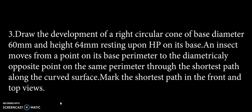Question number three: draw the development of a right circular cone of base diameter 60 mm and height 64 mm resting upon its base. An insect moves from a point on its base perimeter to the diametrically opposite point on the same perimeter through the shortest path along the curved surface. Mark the shortest path in the front and top views.